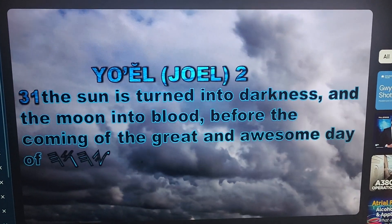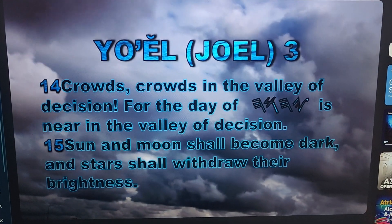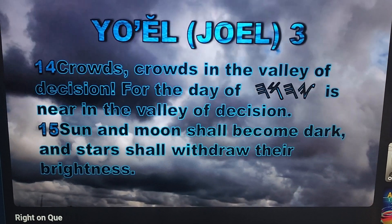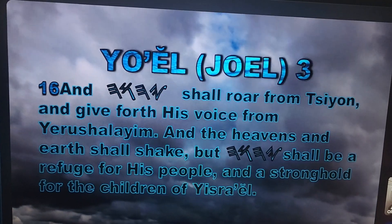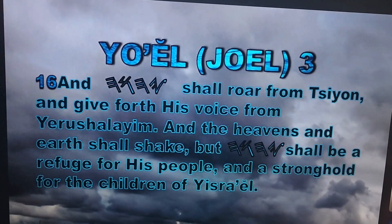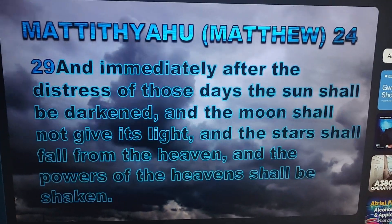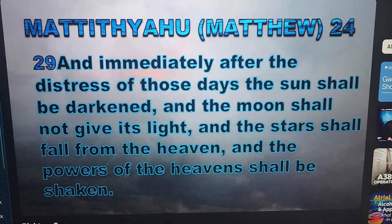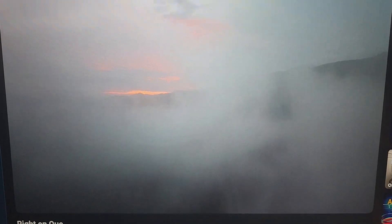Yoel (Joel) 2:31 — 'The sun is turned into darkness and the moon into blood before the coming of the great and awesome day of Yahuwah.' Yoel 3:14 — 'Crowds in the valley of decision, for the day of Yahuwah is near in the valley of decision. Sun and moon shall become dark and stars shall withdraw their brightness, and Yahuwah shall roar from Zion and give forth his voice from Yerushalayim, and the heavens and the earth shall quake, but Yahuwah shall be a refuge for his people.' Matthew 24:29 — 'Immediately after the distress of those days the sun shall be darkened and the moon shall not give its light and the stars shall fall from the heaven and the powers of the heavens shall be shaken.' Just as Qoph represents time, it also represents the appointed time.